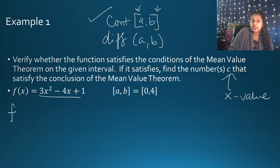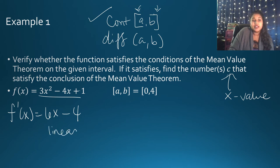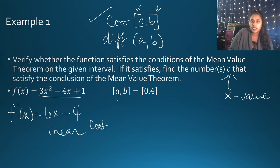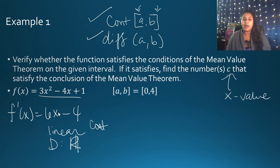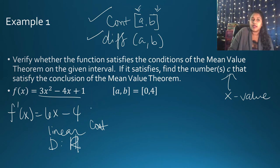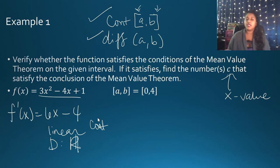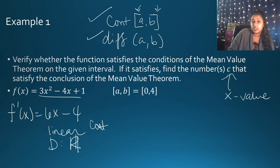What about differentiability? Take the derivative: F'(X) = 6X - 4. That's a linear parent function, which is also continuous everywhere and even on the interval A to B, so it is differentiable. The domain is all real numbers — there are no exceptions. There's nothing that would give a zero in the denominator or an undefined point. Since it is continuous and differentiable, it satisfies the conditions for the Mean Value Theorem.